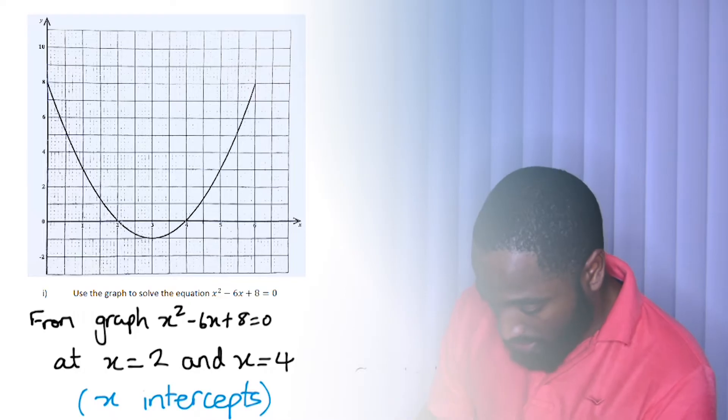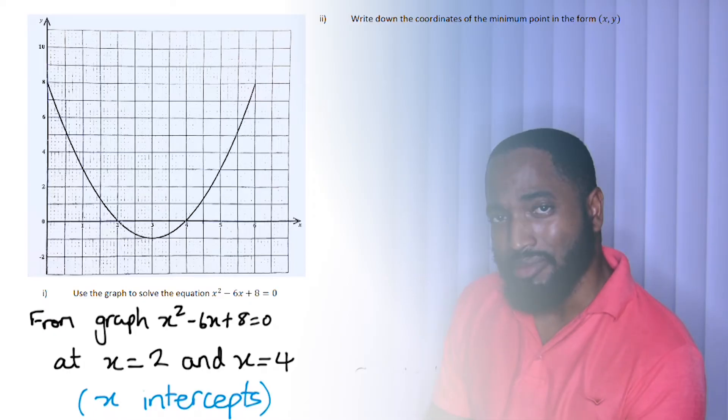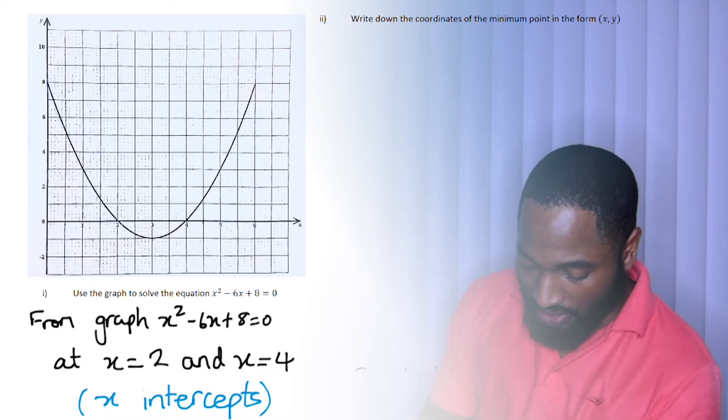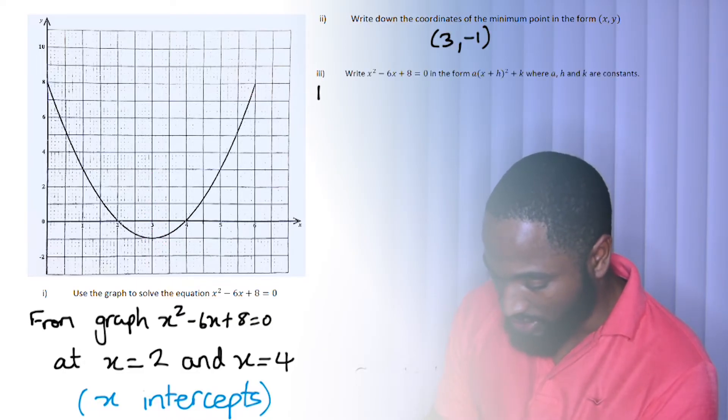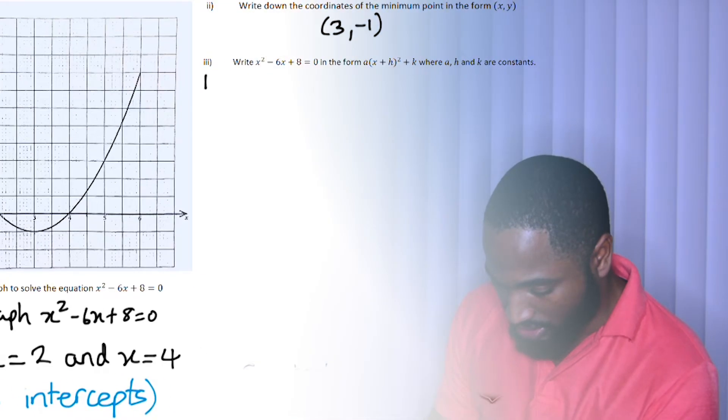Let's look at the next part of this question: write down the coordinates of the minimum point. The minimum point is the lowest part of the graph. That's there. That's the minimum point. So just write down the coordinates of that, which is (3, -1).